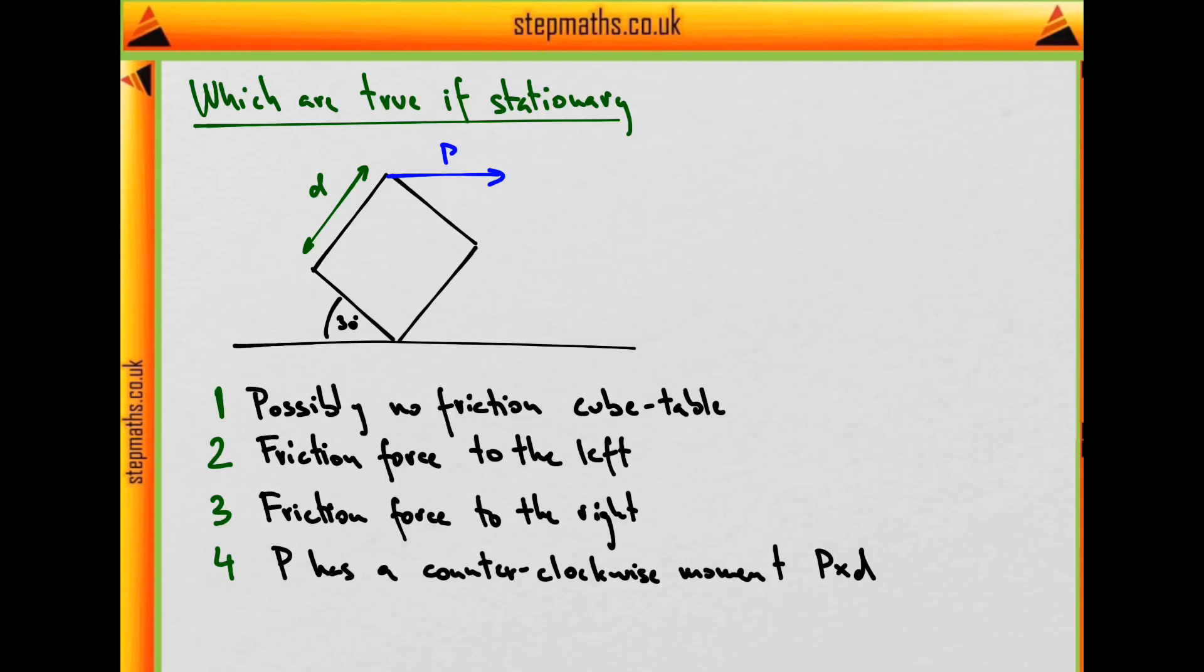Statement two says that there must be a friction force acting to the left here. The third one, the opposite, that there must be a friction force to the right.